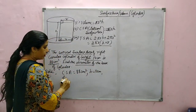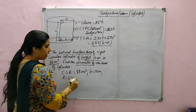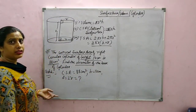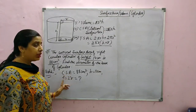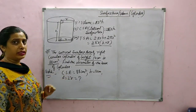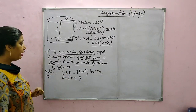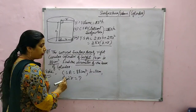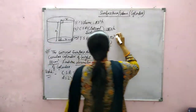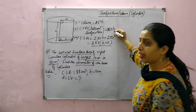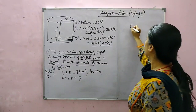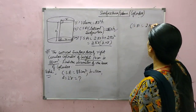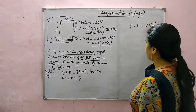Diameter means 2 into R. If we find the radius, we can easily find the diameter. The formula for CSA is 2 pi R H. Write down the formula: 2 pi R H.